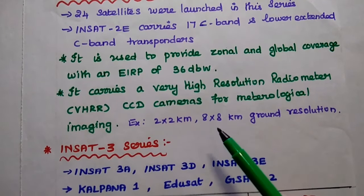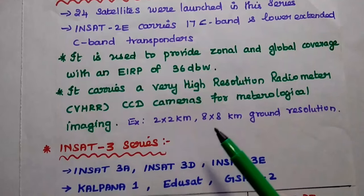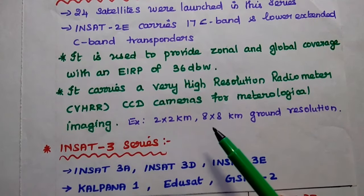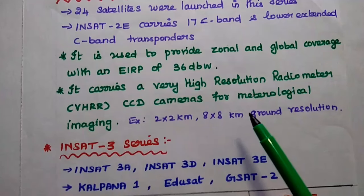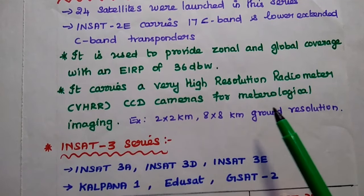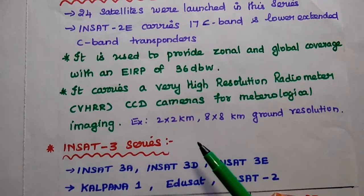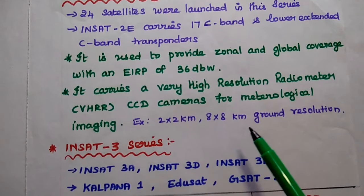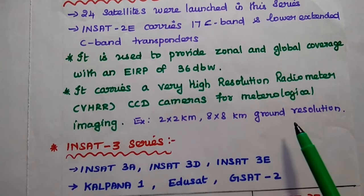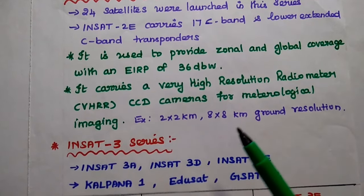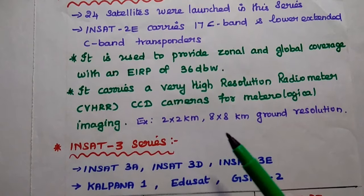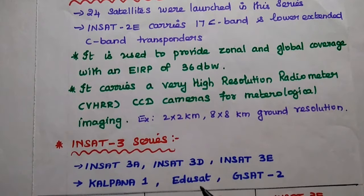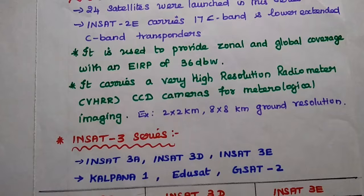INSAT-2E also carries a very high-resolution radiometer with CCD cameras for meteorological imaging. CCD means Charge-Coupled Device — it is a light-sensitive device mainly used for very high resolution. For example, 2x2 km and 8x8 km ground resolution is possible with the VHRR CCD cameras, especially for meteorological imaging analysis.